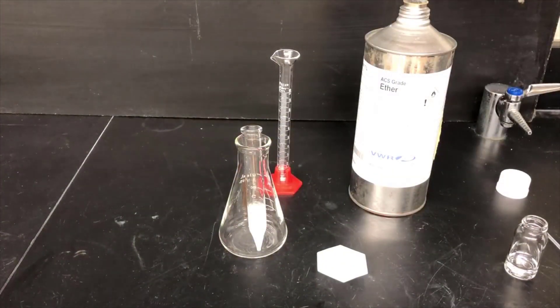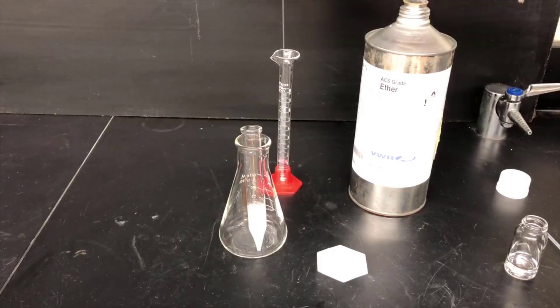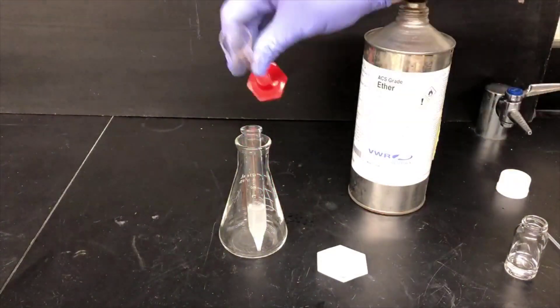Now I'm adding 4 milliliters of ether to the graduated cylinder that I used as the collection vessel in the distillation step, and now I'm adding that to the distillate in the point-bottom vessel.